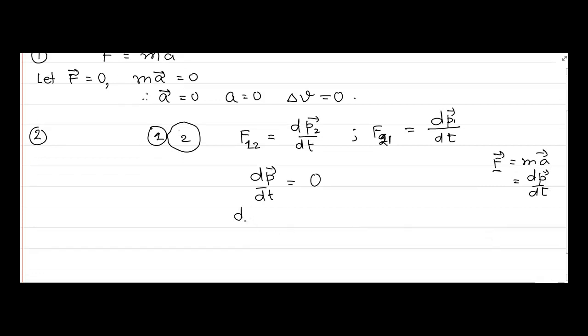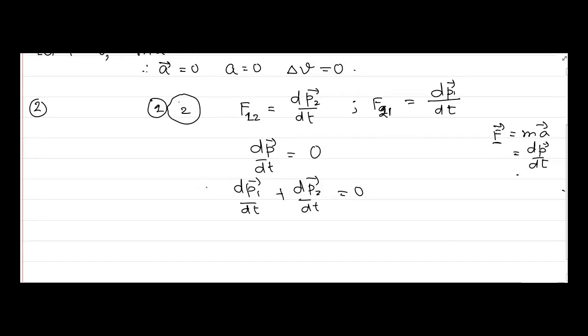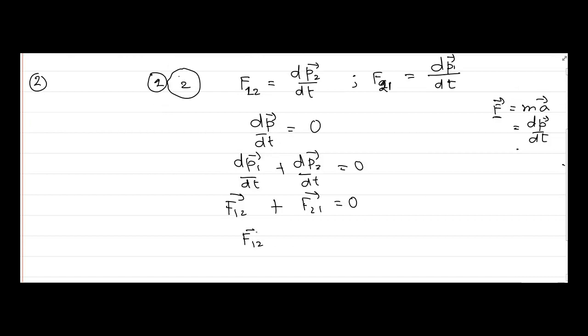That would mean dP1/dt plus dP2/dt equals zero. We know dP1/dt is F21 and dP2/dt is F12. Therefore, F12 plus F21 equals zero, which means F12 equals minus F21. This is the mathematical representation of Newton's third law of motion. When two bodies interact or collide with each other, they apply equal and opposite forces. The minus sign indicates they are in opposite directions.